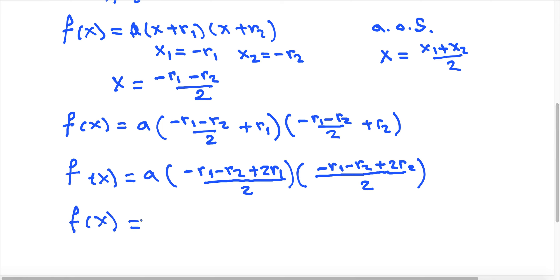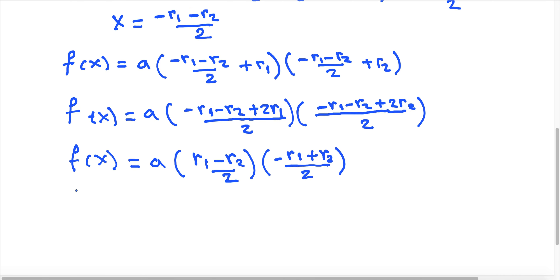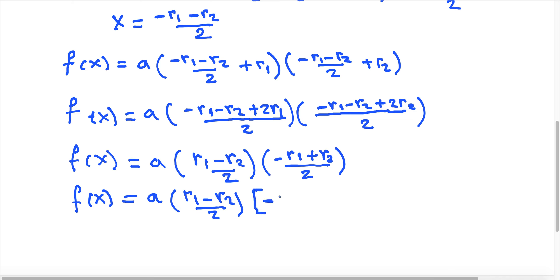So f(x) equals a times (minus r1 plus 2r1 minus r2, all divided by 2) times (minus r1 plus 2r2 minus r2, all divided by 2). This simplifies to a times (r1 minus r2 divided by 2) times (minus r1 plus r2) divided by 2, from which I factorize out a minus sign.